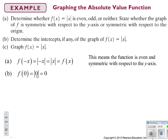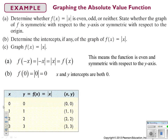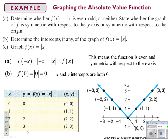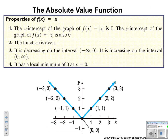Plugging in 0 gives 0, so both x and y intercepts are 0. Putting in values: 0→0, 1→1, 2→2, 3→3, and −3→3. A way to remember absolute value is: 'V for value' and the shape is a V-shape. To summarize: x and y intercepts are both 0, the function is even, decreasing from negative infinity to 0, increasing from 0 to infinity, with a local minimum at 0.